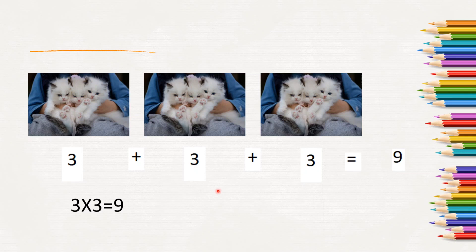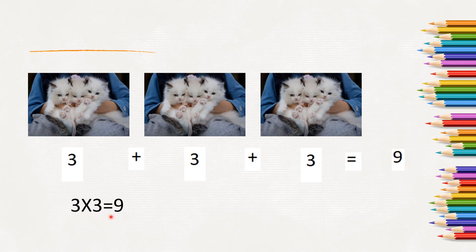We added 3, three times and it is 9. Instead of adding 3 three times, we can multiply 3 three times and we will get the answer 9. We use the multiplication sign to write this statement. The multiplication statement is 3 into 3 — where 'into' means the multiplication sign — equals 9. So, 3 multiplied by 3 is 9, or 3 times 3 is 9.